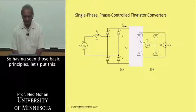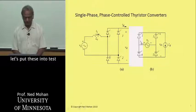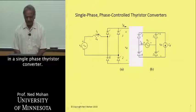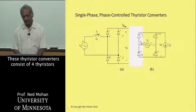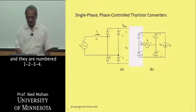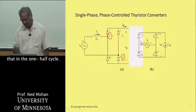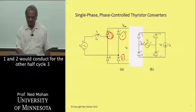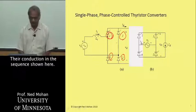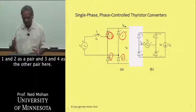Having seen those basic principles, let's put them to test in a single-phase thyristor converter. These thyristor converters consist of four thyristors numbered one, two, three, four. For one half cycle, one and two would conduct, and for the other half cycle, three and four would conduct. They will conduct in the sequence shown here — one and two as a pair, and three and four as the other pair.